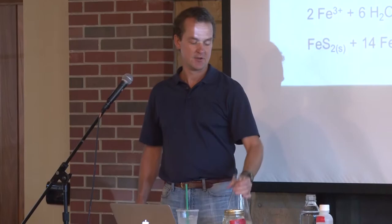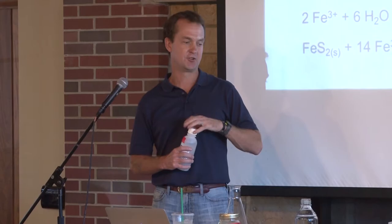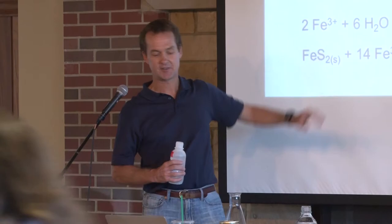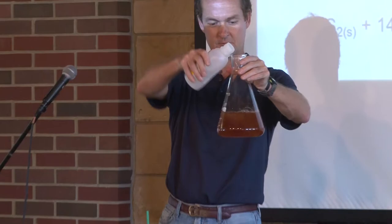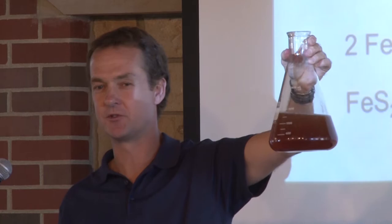As it flows down the stream, it splashes around and gets exposed to oxygen. As the oxygen reacts with the water, these reactions take place and iron changes form. Iron is a very interesting metal in that it has multiple oxidation states and multiple minerals it can form — it's a very flexible element. This is what our streams end up looking like when they're polluted with acid mine drainage.